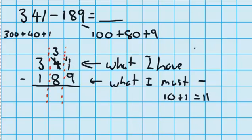So now I can take my 9 away. 11 minus 9. The answer to that is 2 so I write 2 in here and now I'm off to the tens column.